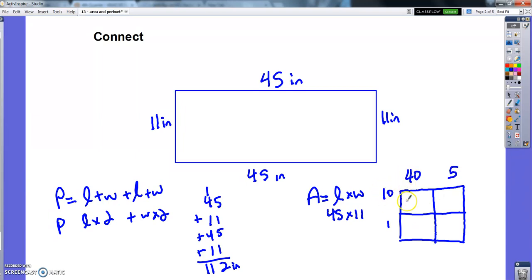1 times 4 is 4. 2 zeros. 10 times 5 is 50. 1 times 40 is 40. 1 times 5 is 5. And it looks like those add up to 495. 495. And remember, area we're making square inches. So the unit is square inches. Alright, so that's what we've done so far.